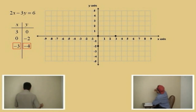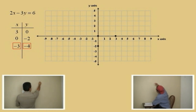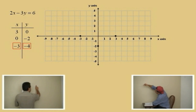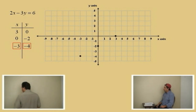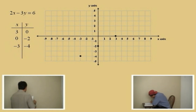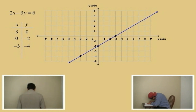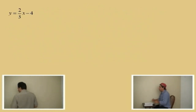Now, let's do our next point: negative 3, negative 4. We start at the origin and move left for the x — to the left 3. Now, for y, we move down — down 4. There's our point. Now, all we have to do is draw the line — just connect the dots. Remember, all lines are straight. Draw your line there, and there you have it. Very nice.